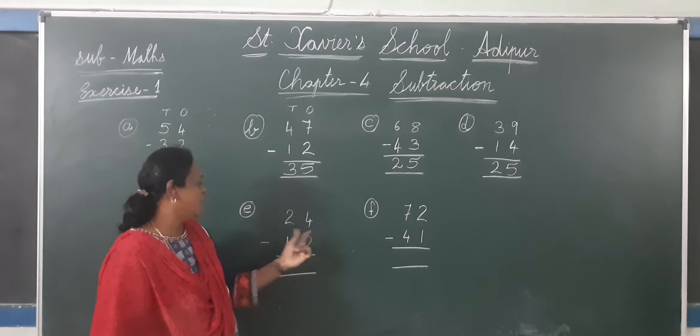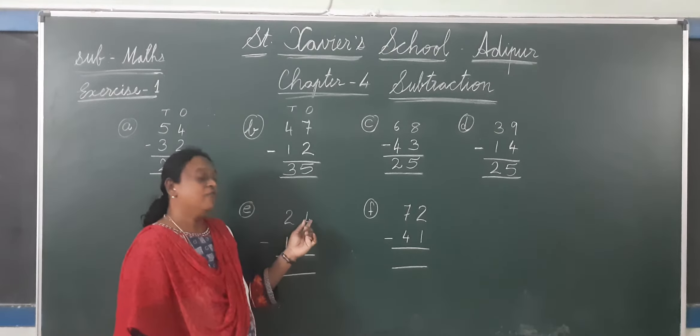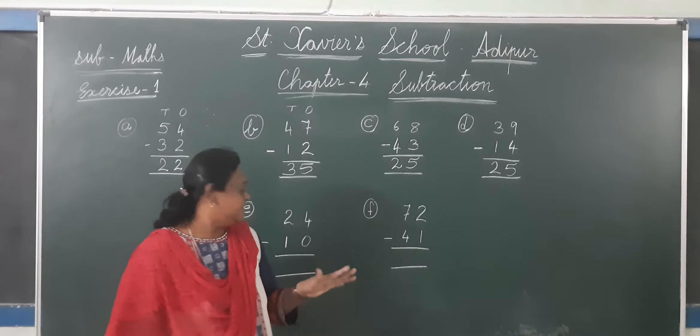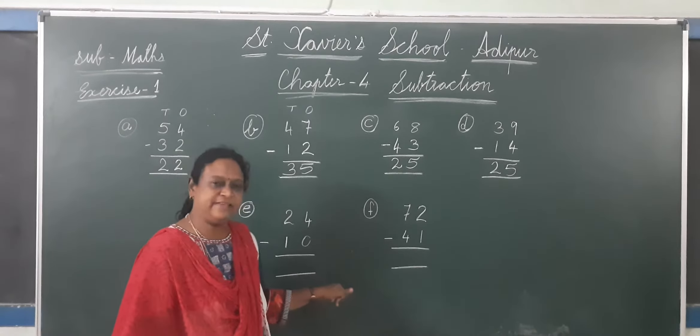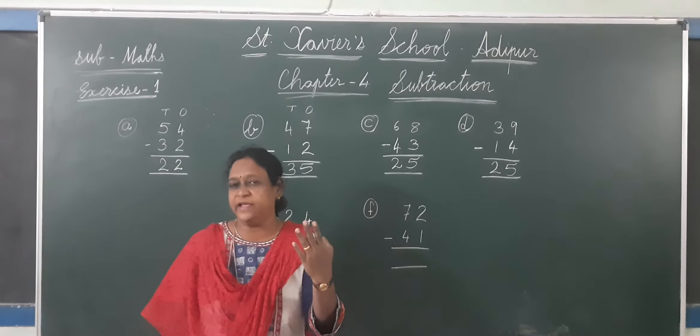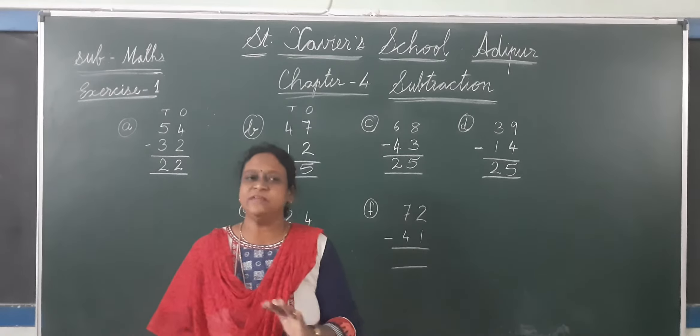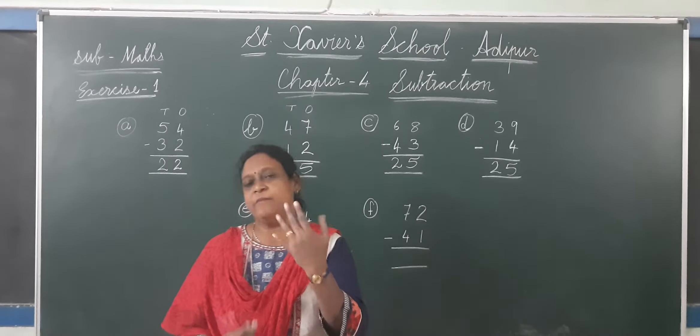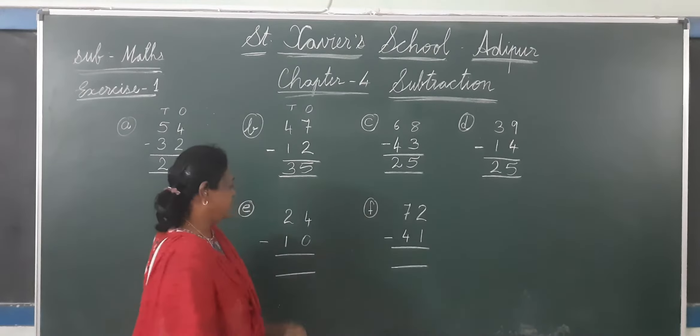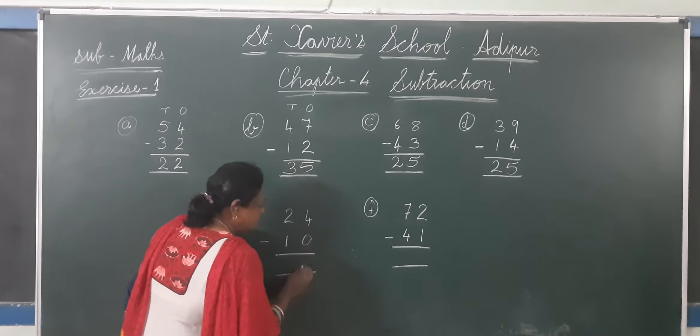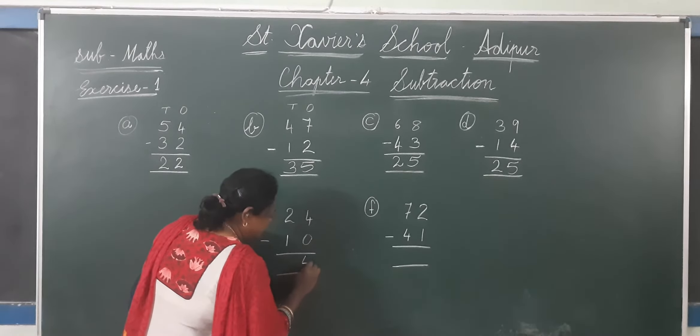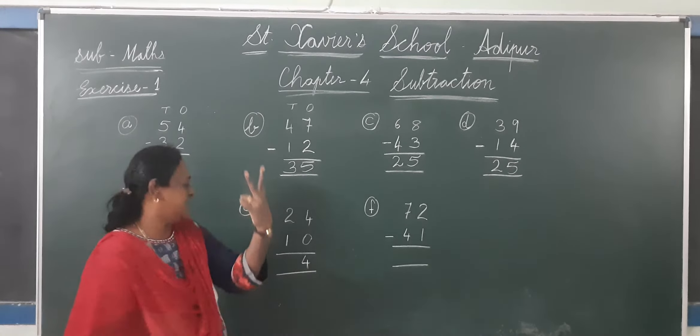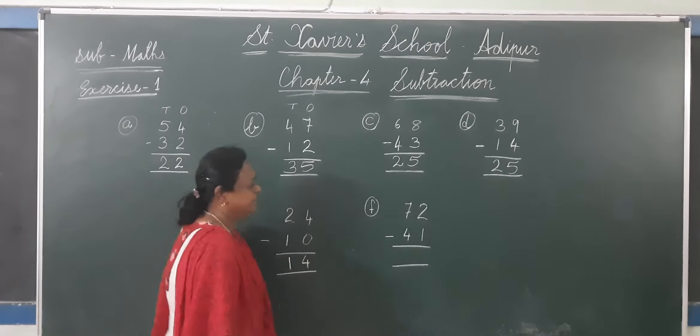Now E. 24 minus 10. 4 minus 0. Jab zero ho. Answer will be same. Hamare paas 4 hai. Humne kisi ko nahi diya. Zero minus. To answer will be same. 4 hamare paas hai. So any number kisi ko bhi hum minus kare, answer will be same. 2 minus 1. 1.